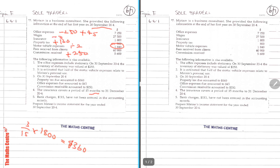That would have to be prepaid. That would be $360 which is prepaid and you have to less out from the insurance. Bank charges $115 have not been entered, so this bank charge of $115 will have to be shown in your income statement as an expense.